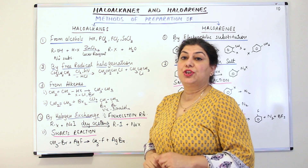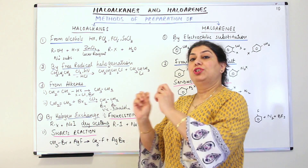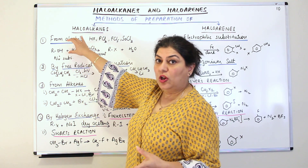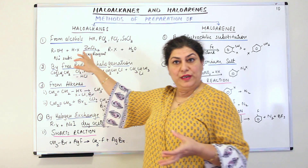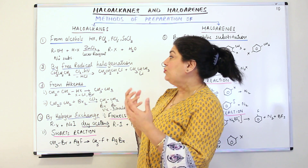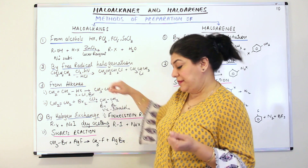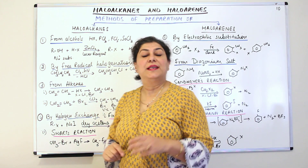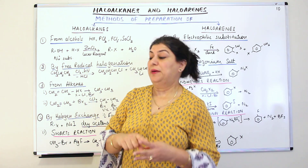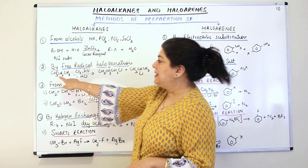The second method of preparation is by free radical halogenation. In free radical halogenation, halogenation takes place by free radical mechanism — unlike from alcohols where you get it by nucleophilic substitution, here you get it from hydrocarbons by free radical mechanism. The free radical mechanism has three steps: the initiation step, the propagation step, and the termination step.